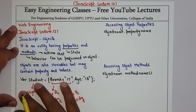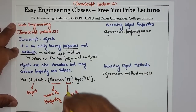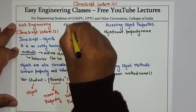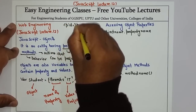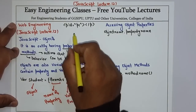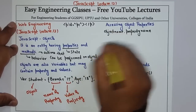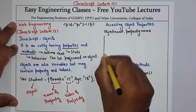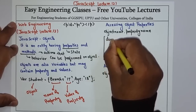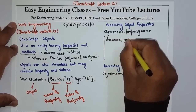So these are the two different ways by which you can access object properties and object methods. Now we will see an example of accessing object properties. Suppose this is the object and its properties 'branch' and 'age' I want to access, and I want to set them in a paragraph tag whose id is 'p1'. Since we have studied DOM, I will use dynamic content — document dot get element by id.